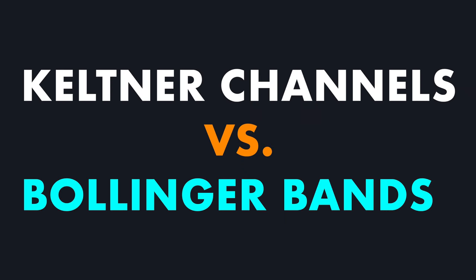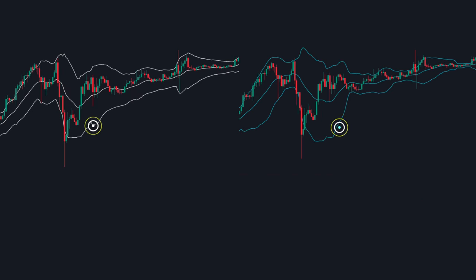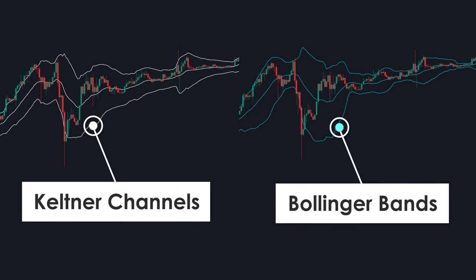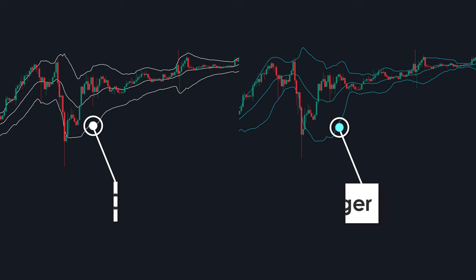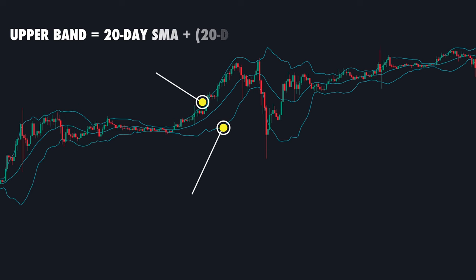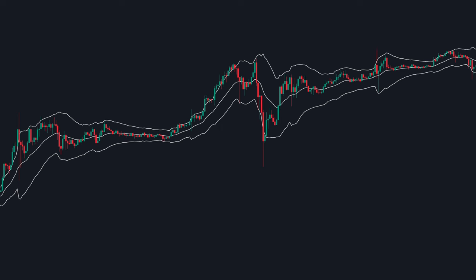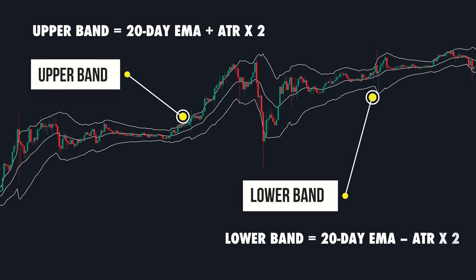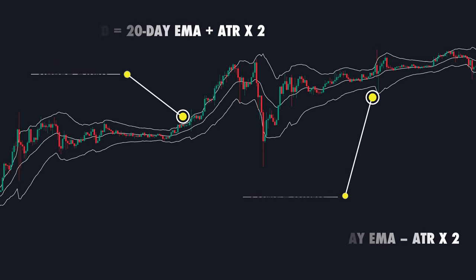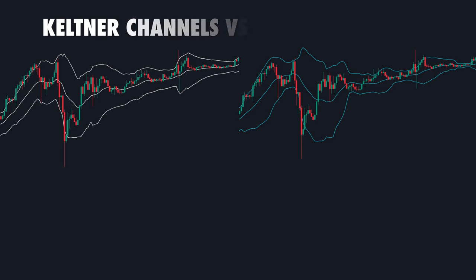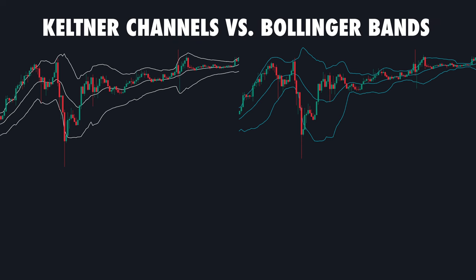Let's compare Keltner Channels to another widely used indicator, the Bollinger Bands. On this chart, we have both indicators side-by-side. While both are volatility-based channels, there are significant differences in how they're calculated and the signals they generate. Bollinger Bands rely on standard deviation to determine the width of the channel, whereas Keltner Channels use the Average True Range (ATR). This difference in calculation affects how quickly each indicator reacts to price changes and the type of signals they generate.